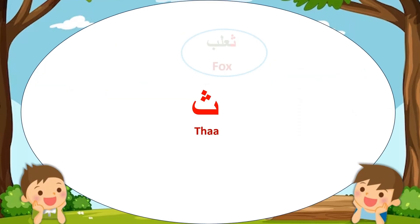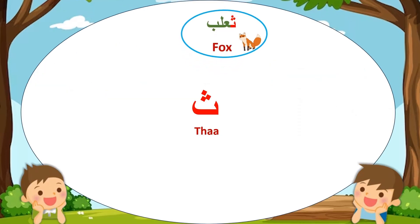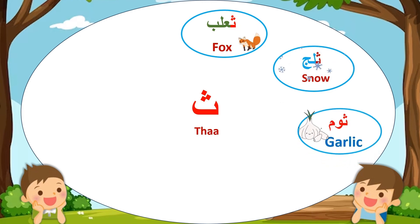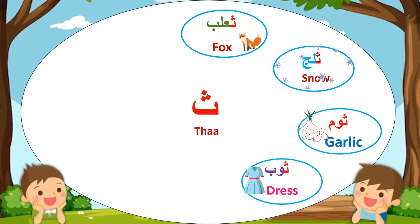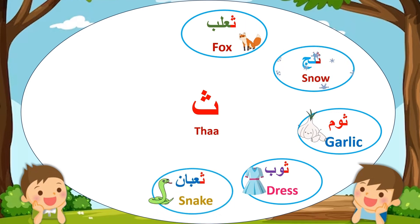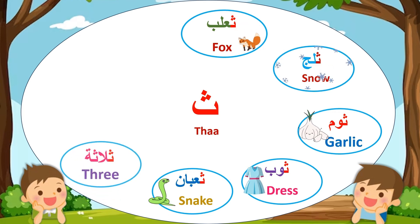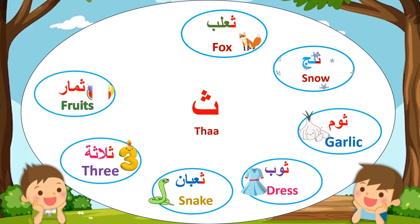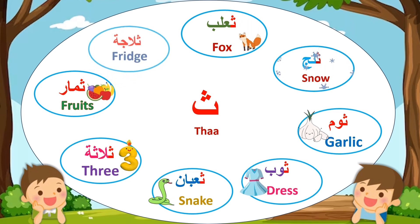Saq — Fox. Saq — Snow. Saq — plans, Snake. Salata. Three. Simar. Fruits. Salaja, Fridge.